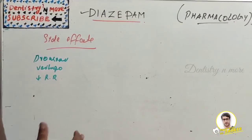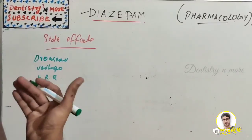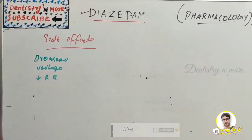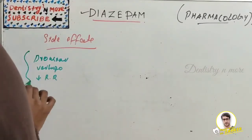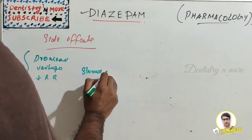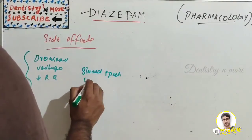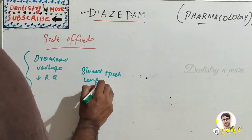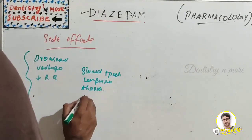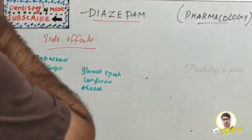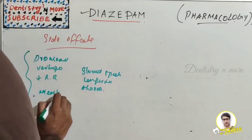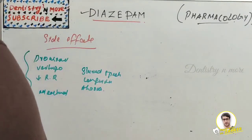Sedation is a commonly reported adverse event associated with diazepam regardless of the route of administration. Other reported side effects include slurred speech, confusion, ataxia, nausea, vomiting, and menstrual problems.